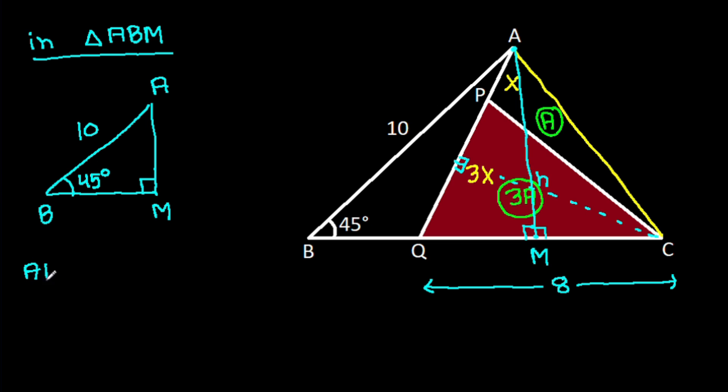So AM will be AB times sin 45 degrees, which is 10 times 1 over root 2, and it will be 5 times root 2. So we get AM is 5 times root 2.